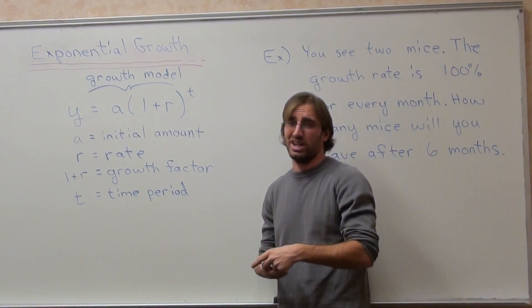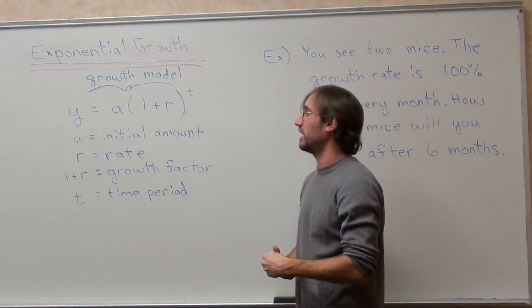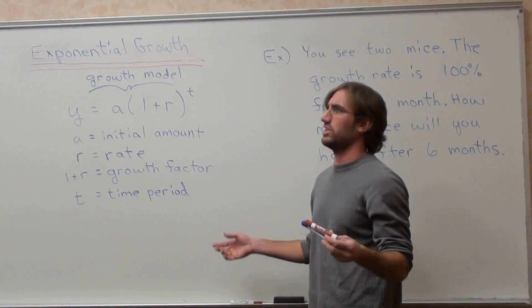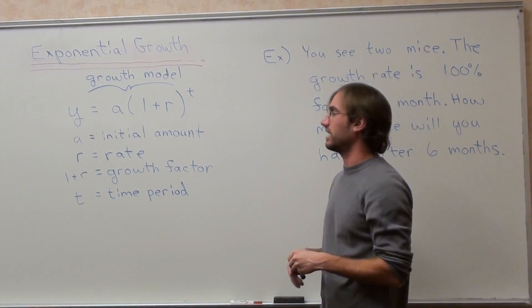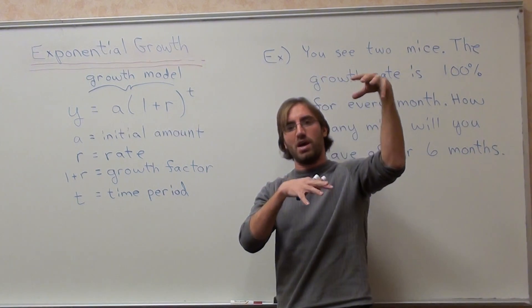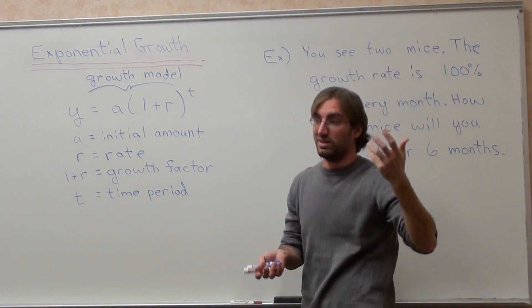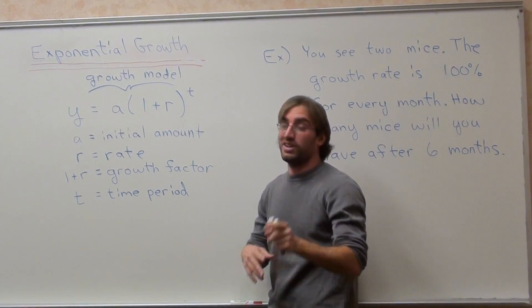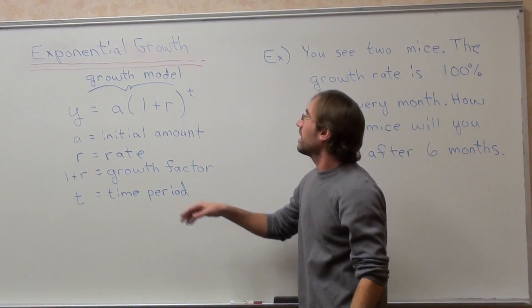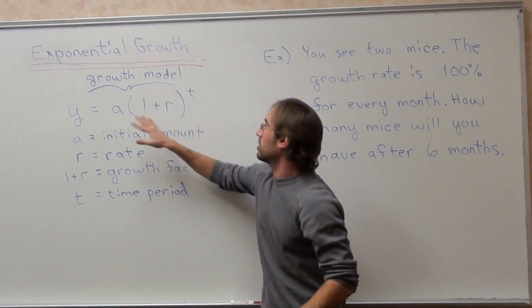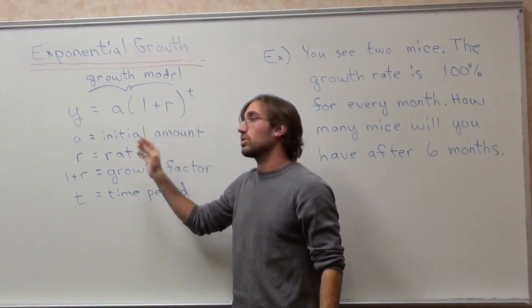Population on Earth works the same way — it's grown exponentially over the last 110 years. We went from 1 billion to about 7 billion 100 years later. So I want to talk about this growth model.